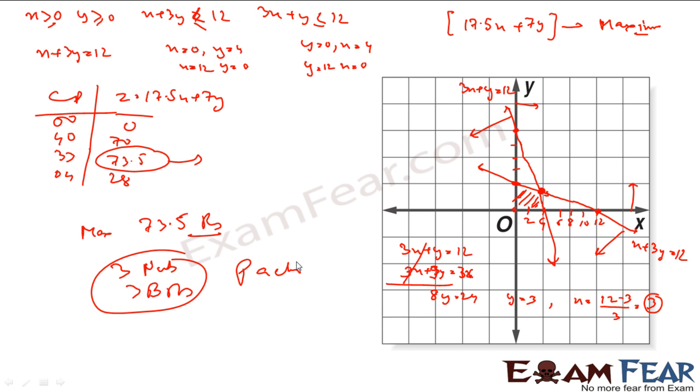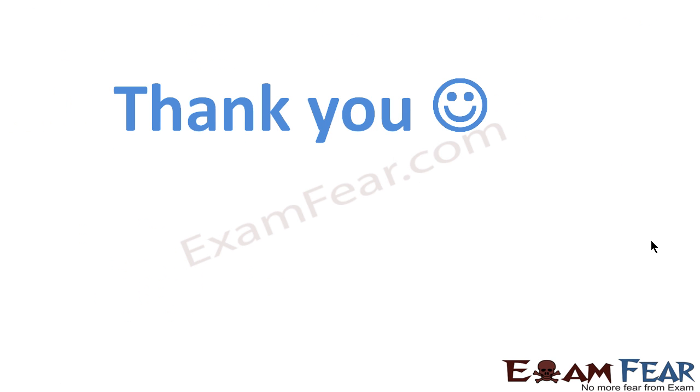So the maximum profit is 73.5, and this happens when you prepare 3 nuts and 3 bolts. Very simple, not a difficult task. You have this problem, combine it to mathematical models, mathematical equations, solve it, get the answer. Thank you.